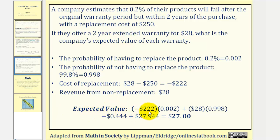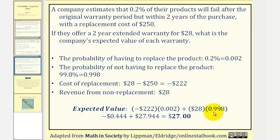The expected value equals the replacement cost of negative $222.00 times the probability of replacing the item, which is 0.002, plus the revenue from not having to replace the item, which is $28.00, times the probability of not having to replace the product, which is 0.998. Finding the sum of these products gives us the expected value for the company.